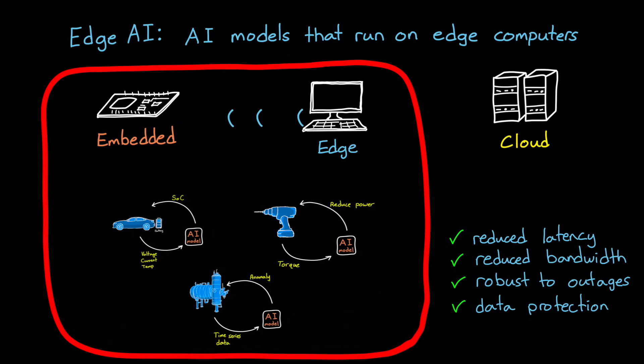And finally, a fourth benefit is data protection. Since the majority of the data is kept locally, you have more control over how that data is protected. You're not sending it out over the internet or storing it on third-party servers. All right, so perhaps now you're convinced of the importance of edge and embedded AI. The question now is, is developing AI for an embedded or edge processor really any different than developing AI that just runs on the cloud?